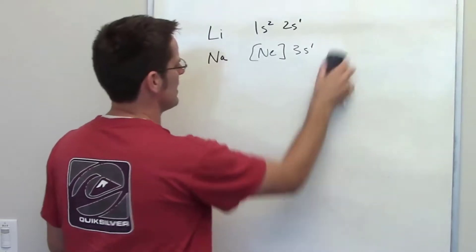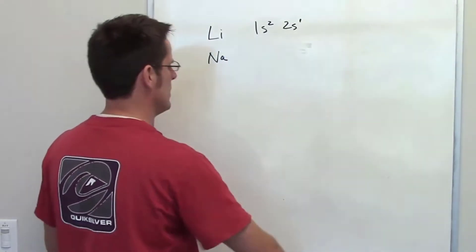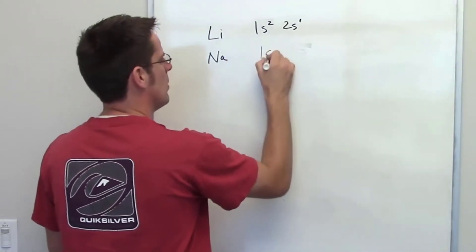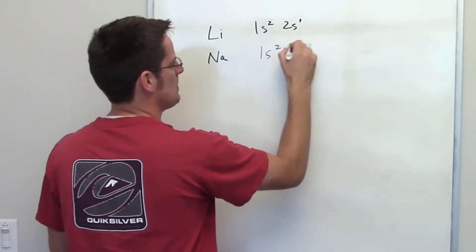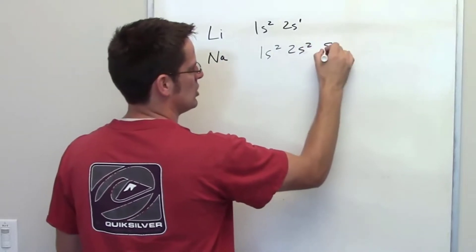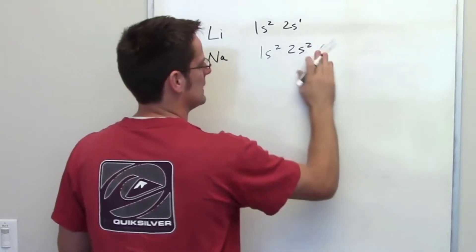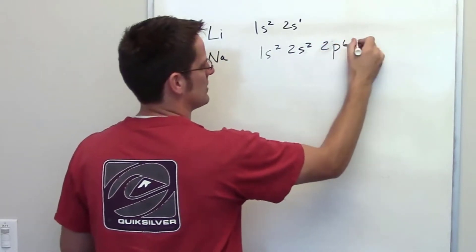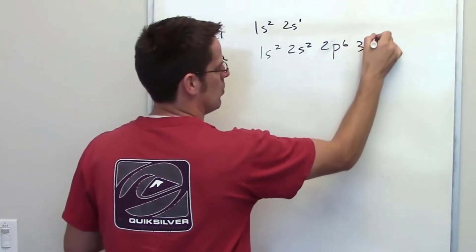If I write that whole thing out the longhand way, sodium's configuration is 1s2, 2s2, 2p6, 3s1.